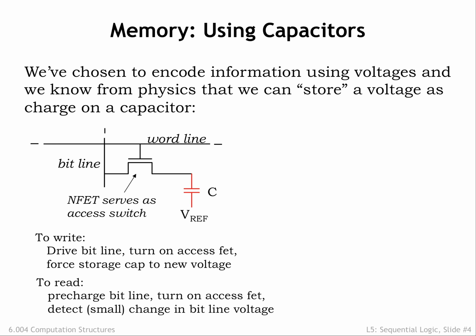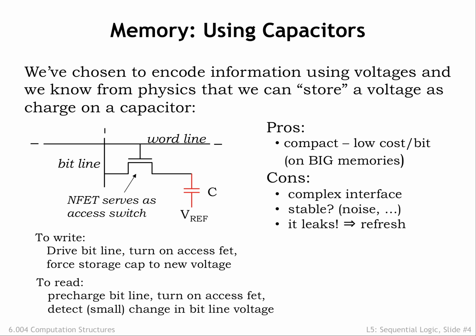Reading and writing require a whole sequence of operations along with carefully designed analog electronics. The good news is that the individual storage capacitors are quite small. In modern integrated circuits we can fit billions of bits of storage on relatively inexpensive chips called dynamic random access memories, or DRAMs for short. DRAMs have a very low cost per bit of storage. The bad news is that the complex sequence of operations required for reading and writing takes a while, so access times are relatively slow.